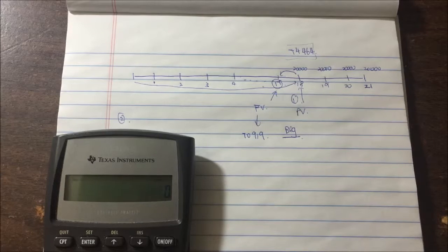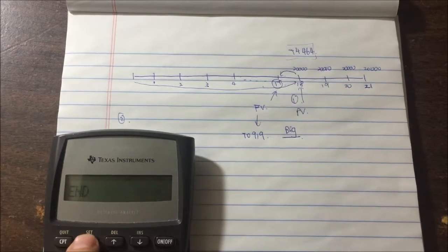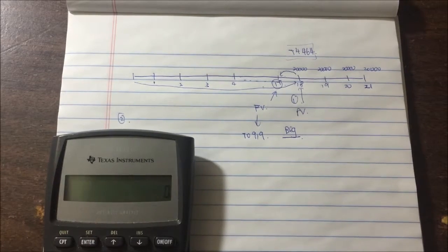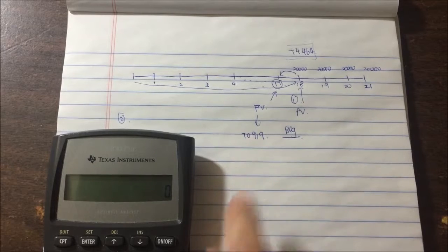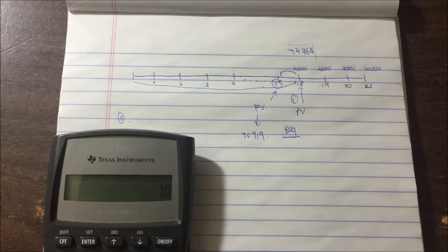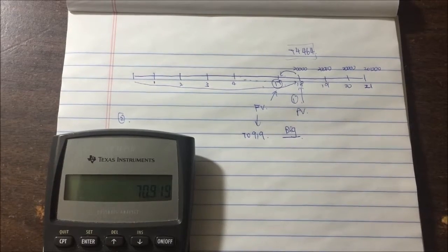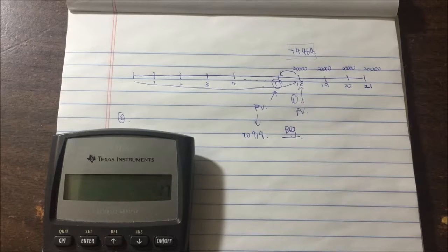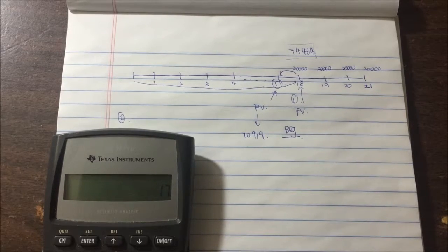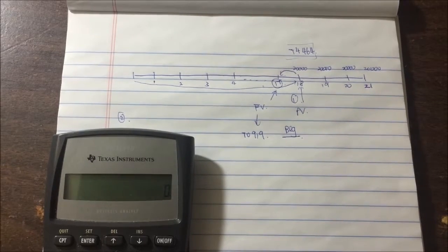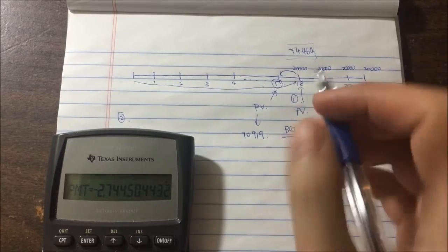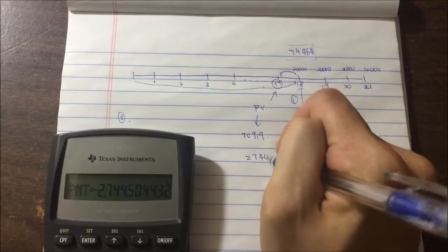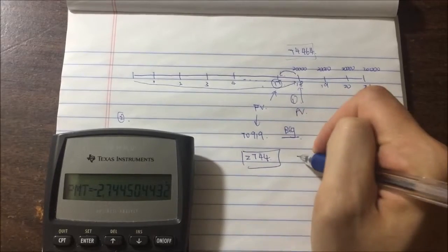This time the future value is $70,919. Interest rate is 5%, number of periods is 17, present value is zero, and we're trying to get the payment. The answer is $2,744.